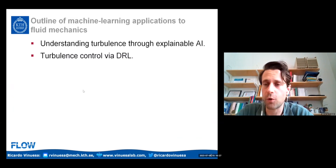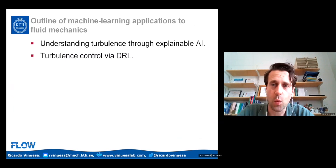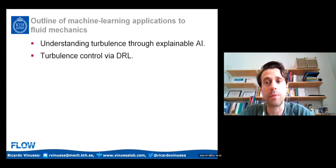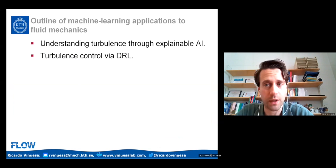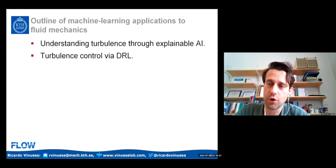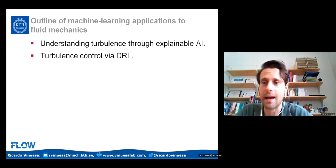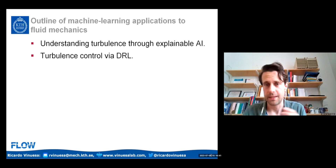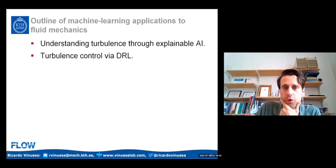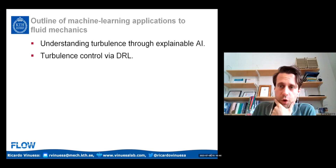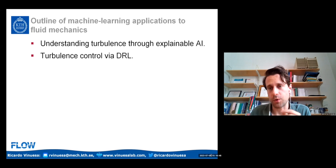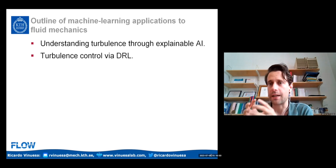Today I'm going to be focusing on two different areas. One is trying to use deep learning to understand something about turbulence, using what is called explainable AI, or explainable deep learning. And in the second part, I'm going to be using deep reinforcement learning for turbulence control. So we're going to first learn something about the flow, and second, try to control the flow.